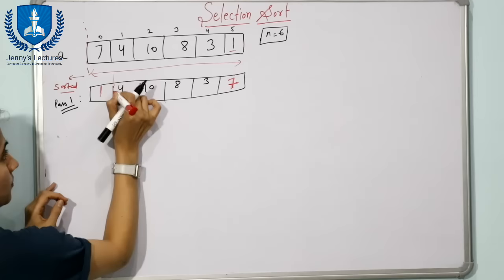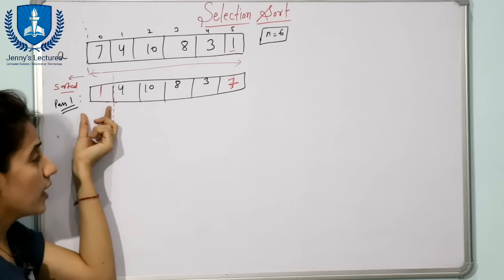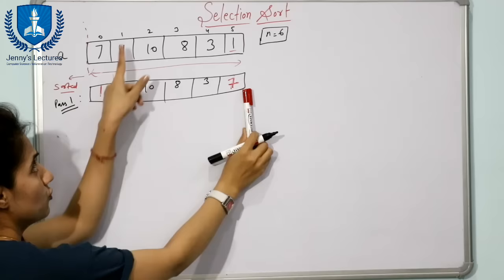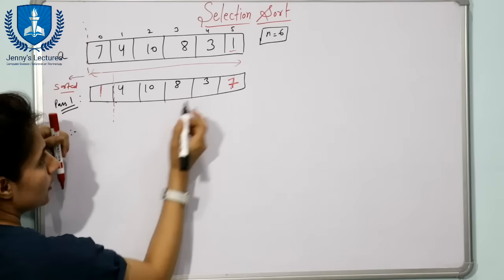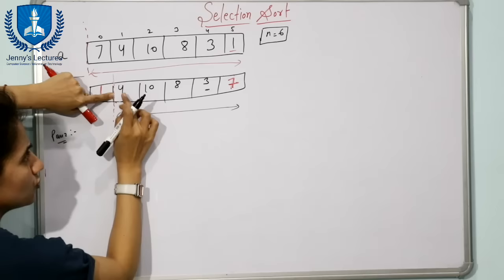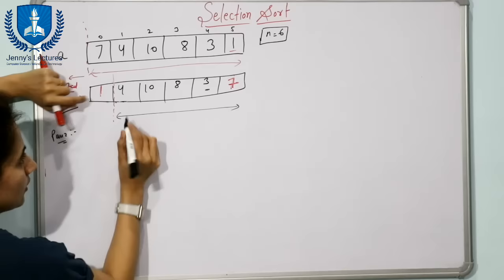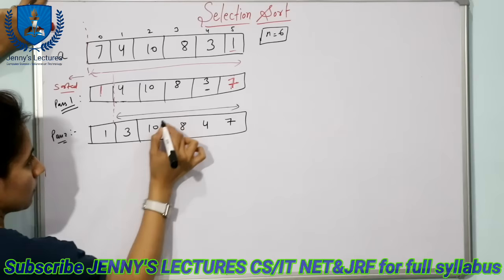Now in our sorted subarray we have one element, that is 1. This is now the sorted subarray and the rest is the unsorted subarray from index 1 to 5. In pass 2, from the unsorted subarray find out the minimum element. The minimum element is 3. Swap this 3 with 4, which is at the beginning of the unsorted subarray. So 3 goes to position 1 and 4 goes to the place of 3. The remaining elements 7, 10, 8, and 1 stay as they are.